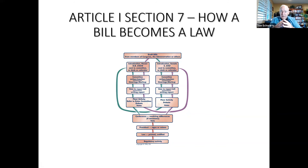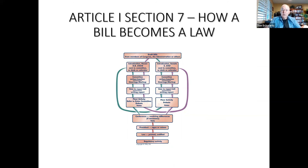If the House approves one version of a bill and the Senate approves a different version, it goes to a conference committee to iron out the differences. If they succeed, it is sent to the President for his signature. The President can either sign it or veto it. If the President vetoes it, it goes back to each House, which can override the presidential veto, but only by a two-thirds vote. Most bills never become law.